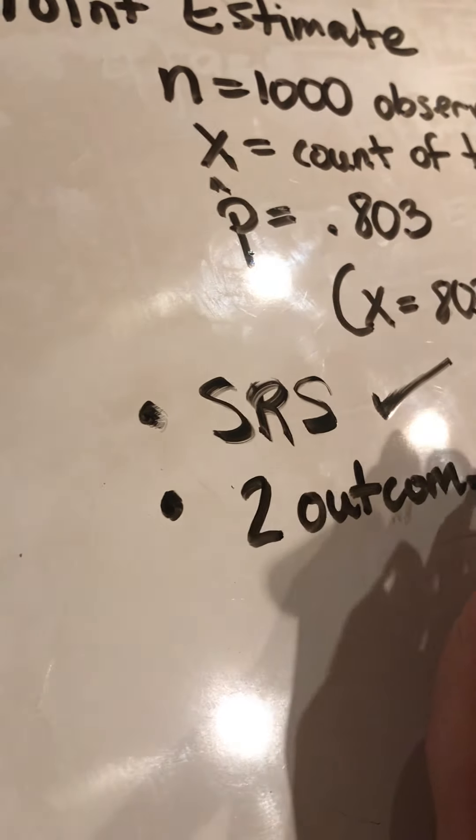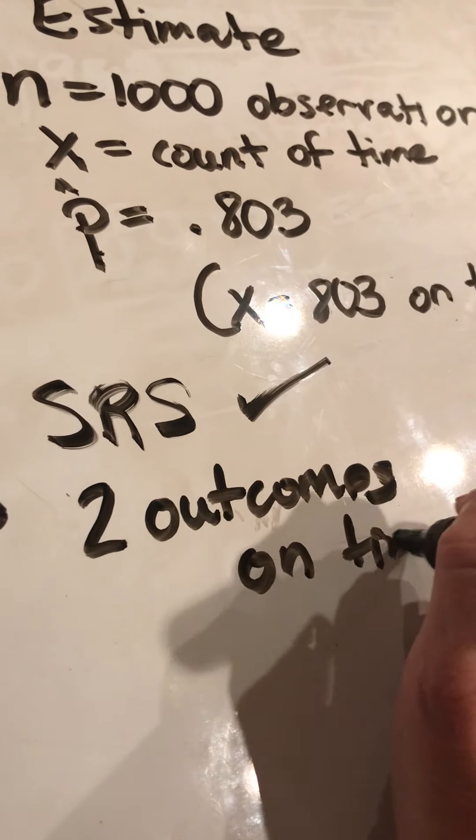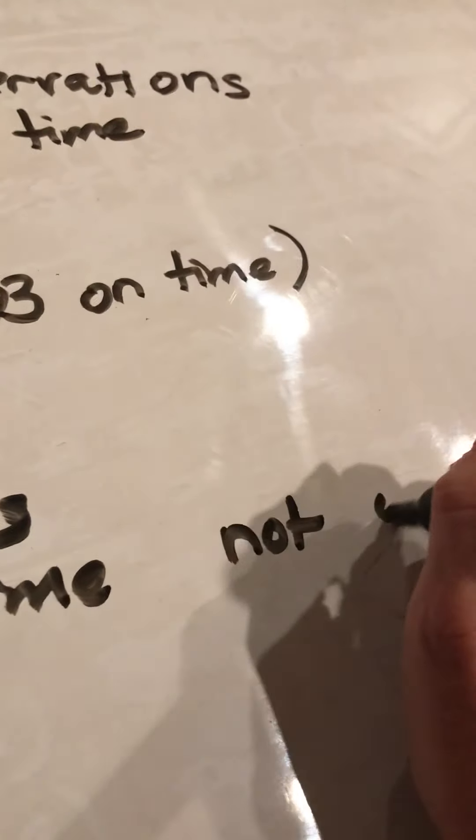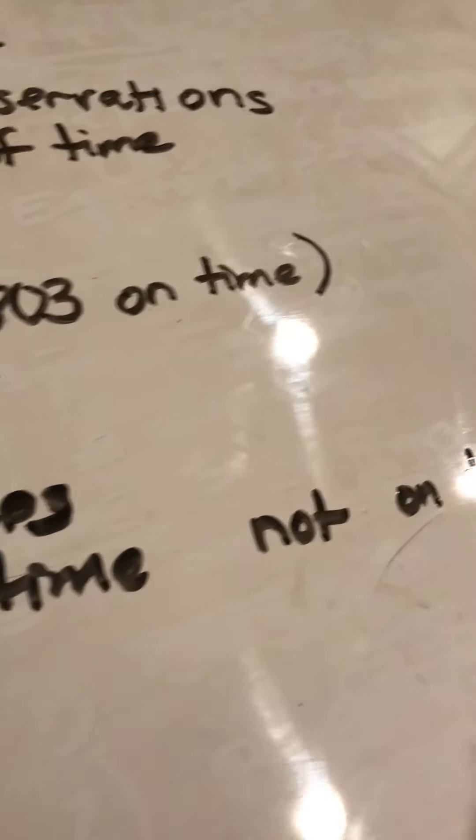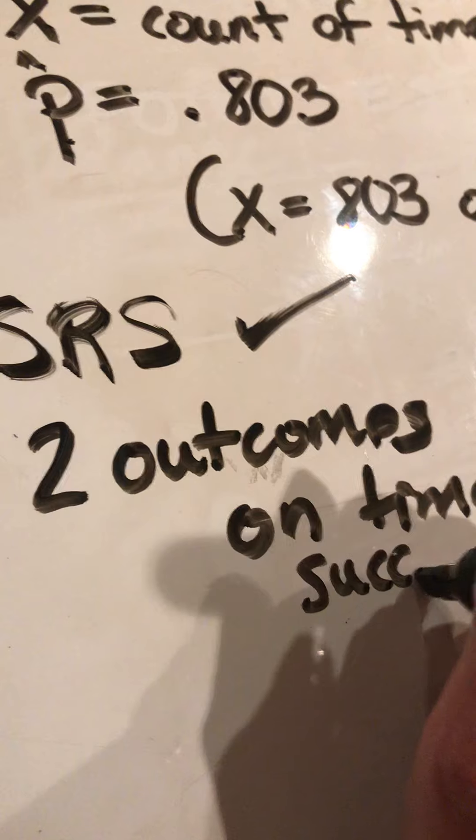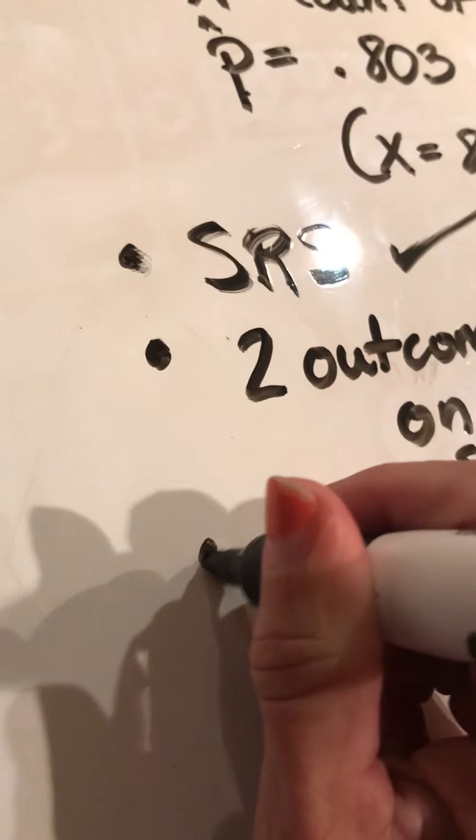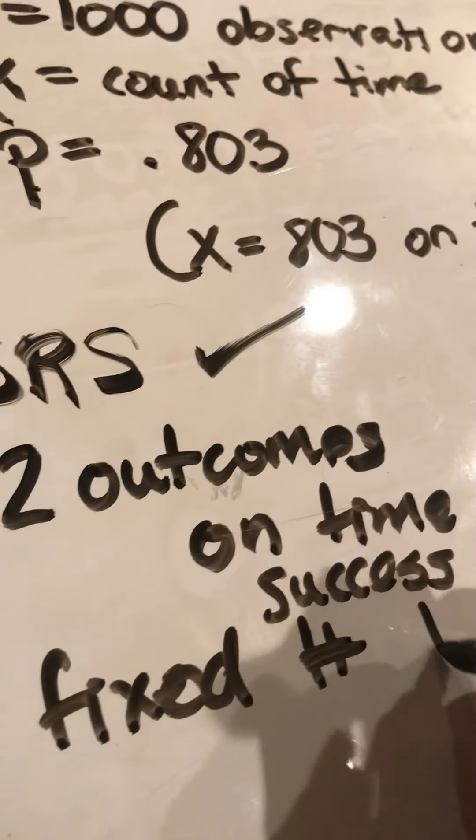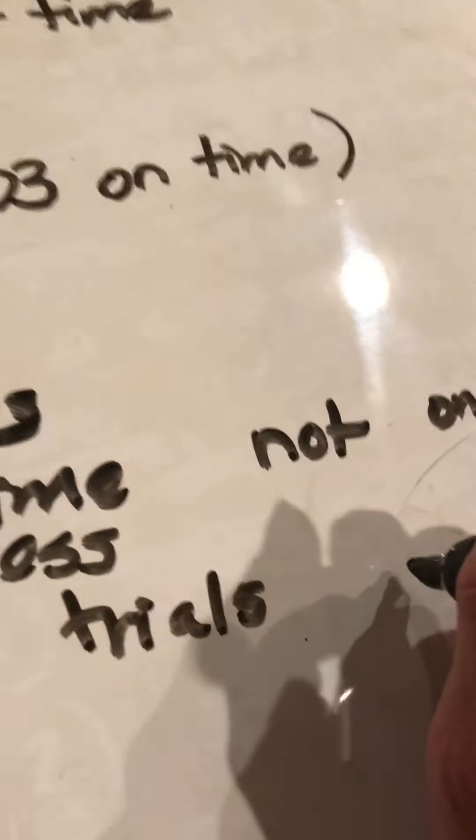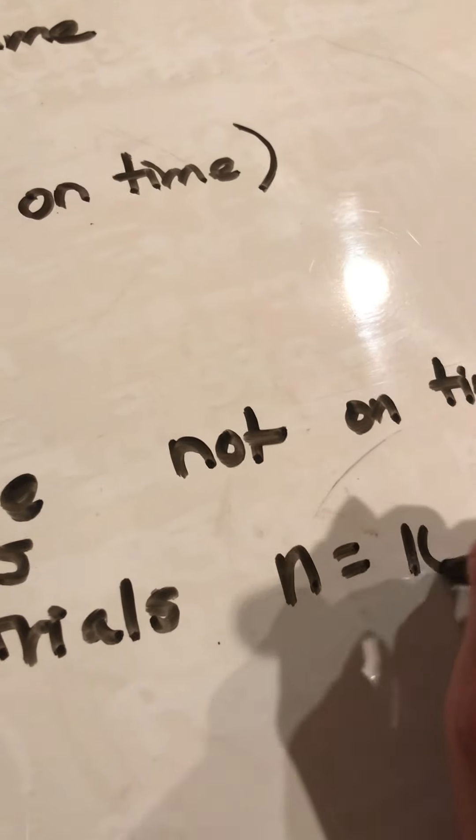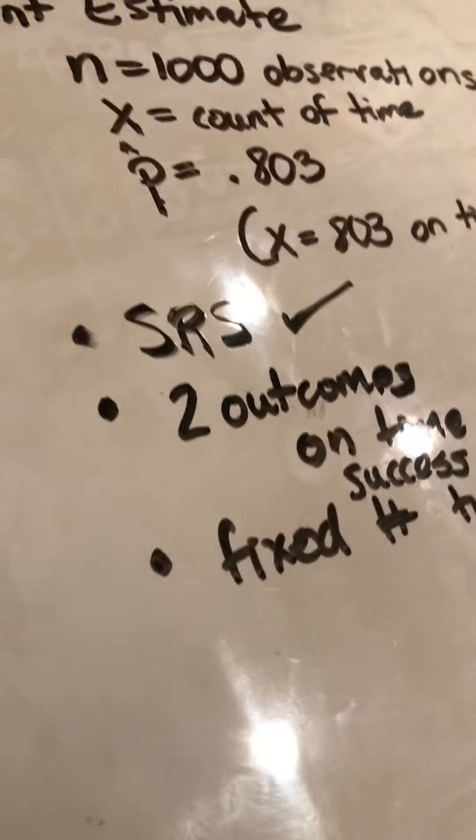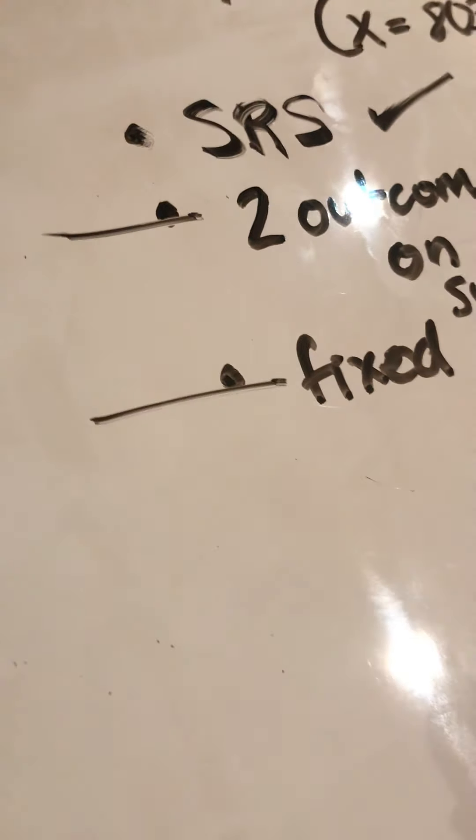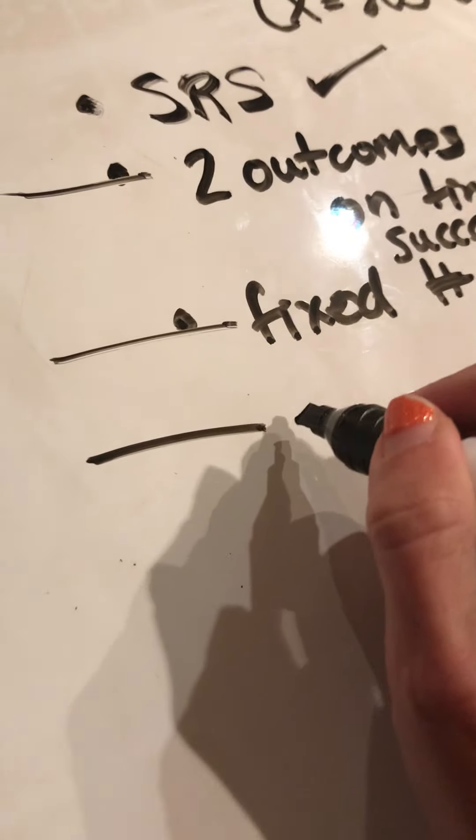I have on time, and I have not on time. So I grouped early and on time together. So this is the success. Do I have a fixed number of trials? So in this sample, how many observations did I decide to take? And I decided on 1,000. I wasn't going to just observe planes until somebody was on time. I've got the binomial. Two outcomes for binomial. Fixed number of trials, so it's not geometric. Do I have independence?